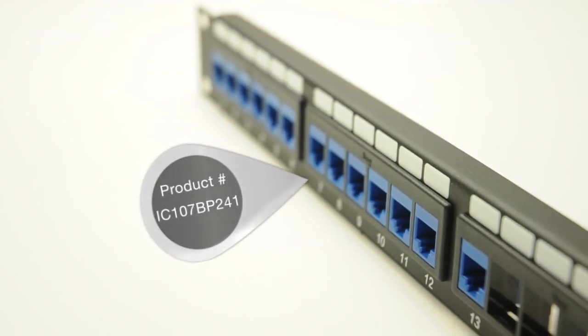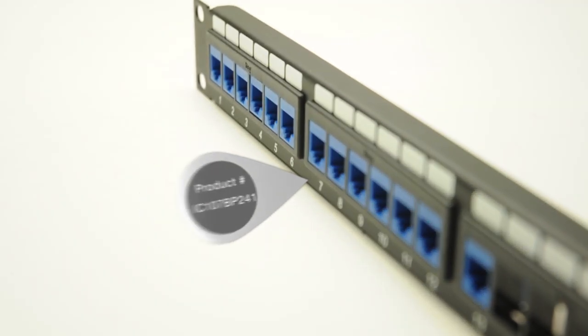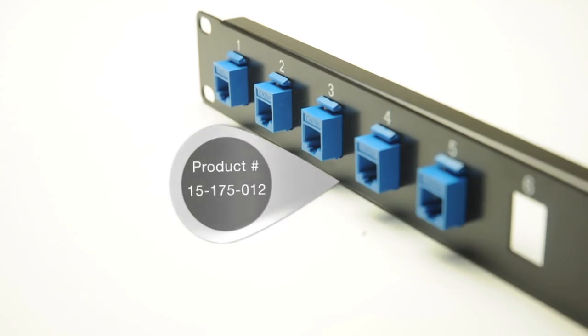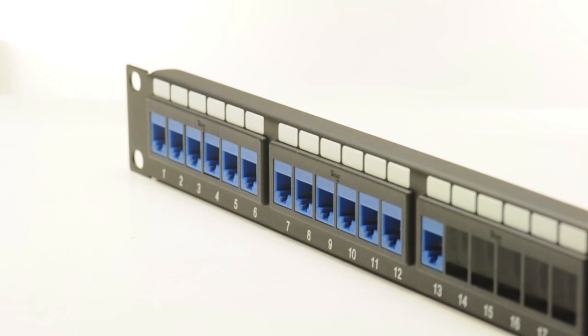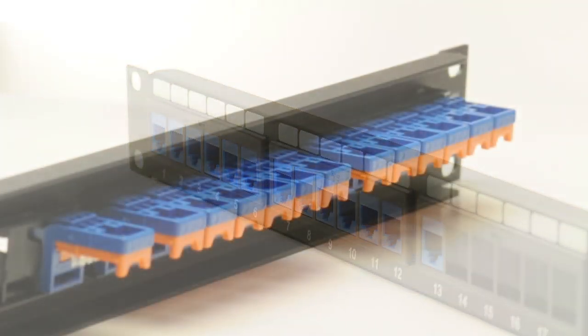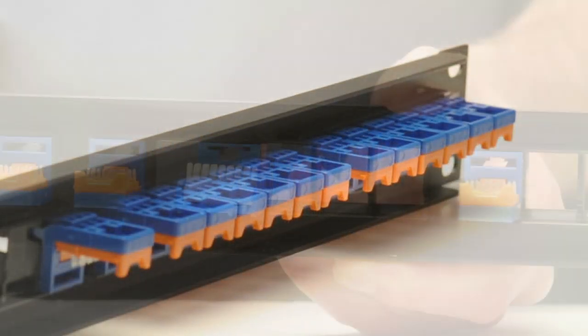A high density patch panel fits more ports into the same space as a patch panel using standard keystone jacks. Because these ports are closer together, you will need to use high density jacks.